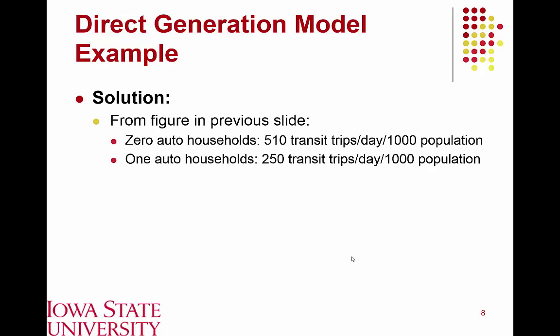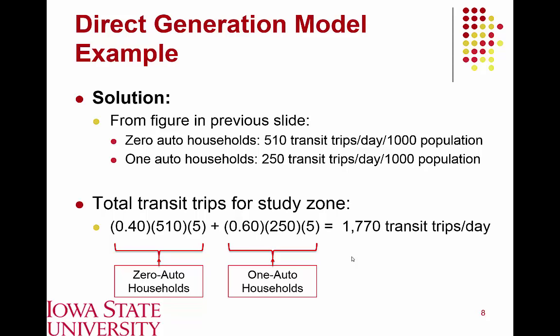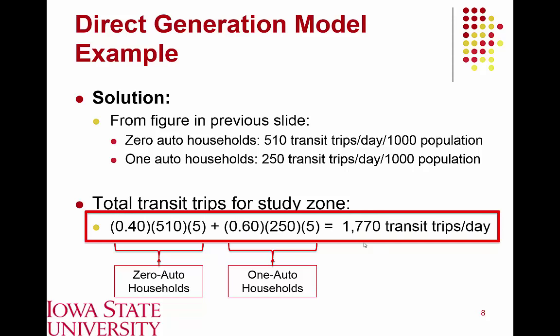Summing these, we get 510 trips per day per 1,000 population for zero-auto households and 250 for one-auto households. Given that 40% of this study area had zero autos and 60% had one auto, we take 40% of the 5,000 population times 510 trips, and likewise for one-auto households: 60% of 5,000 individuals times 250 trips per 1,000 people. This gives us a total of 1,770 transit trips per day as the final solution.